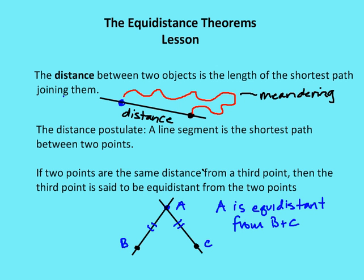Let's back up a second and talk about some things you need to know before we review the theorems. First is that in math, the distance in geometry, the distance between two objects is the length of the shortest path joining them. So the distance between the blue dot and the red dot is along the black line. If you take the red line, I call that meandering.